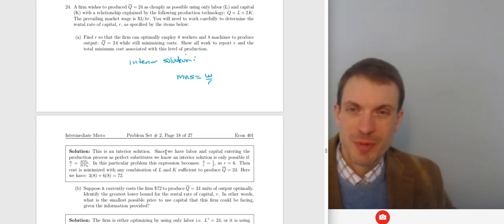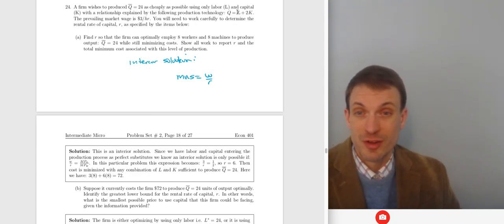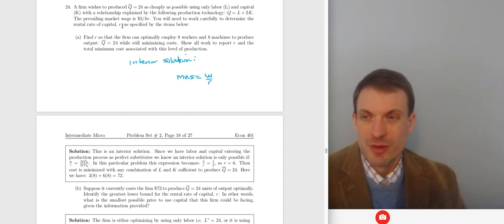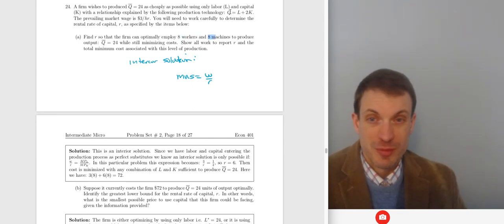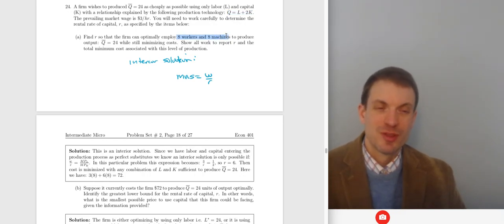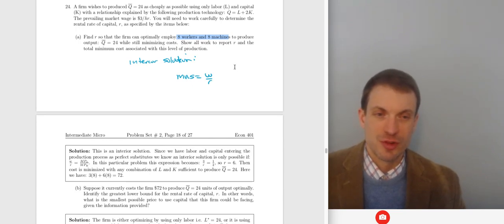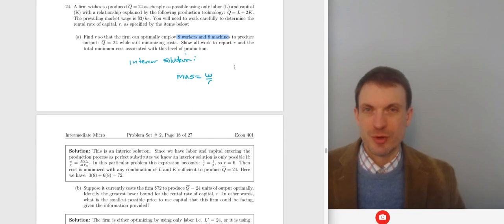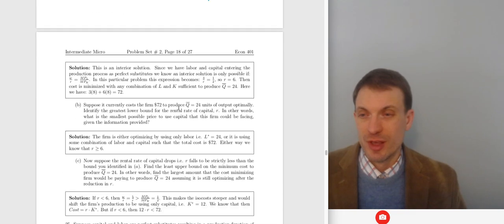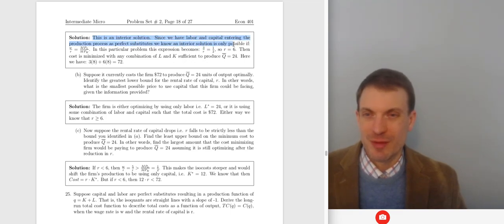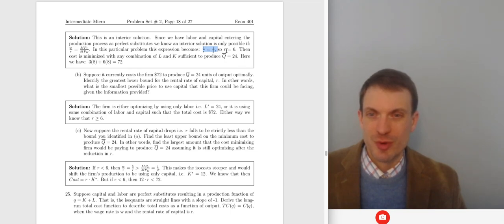Suppose the firm wants to produce 24 units with a different production technology. The MRTS is the coefficient on labor divided by the coefficient on capital: 1/2. The prevailing market wage is $3. In part A, we're using 8 workers and 8 machines — a perfect substitutes interior solution. The slopes must be equal, so 3/R = 1/2, giving R = 6. Cost is minimized with any combination sufficient for 24 units: 24 + 48 = 72 units... so the cost is $72.